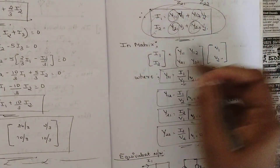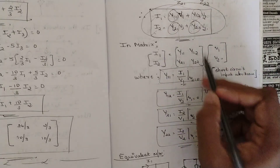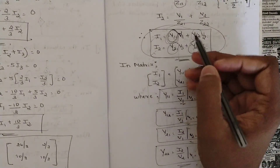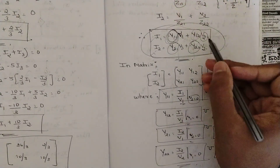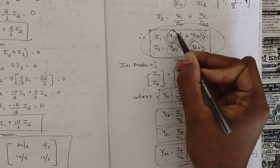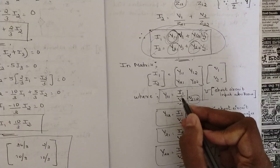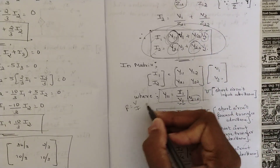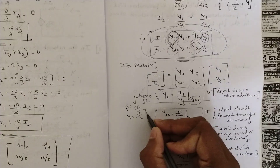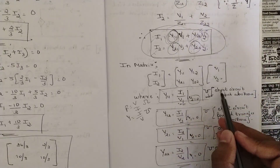Writing this in matrix form: [I1, I2] = [Y matrix] × [V1, V2]. To find Y11, we set V2 = 0, which makes the V2 term vanish, leaving I1 = Y11·V1. So Y11 = I1/V1, which is in the form I/V — measured in mho (the reciprocal of ohm). This is called the short-circuit input admittance.